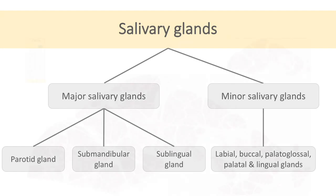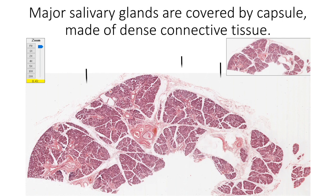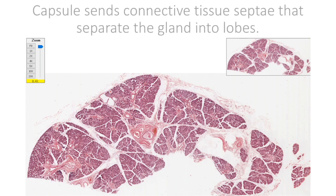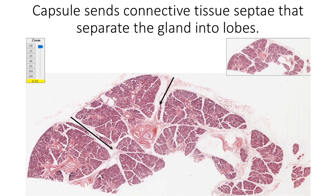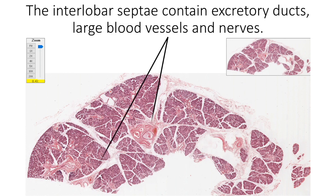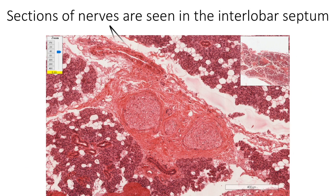Major salivary glands are covered by a capsule made up of moderately dense connective tissue. The capsule sends connective tissue septa into the gland, dividing it into many lobes. The interlobar septa contain larger salivary ducts, large blood vessels, and few nerves. In the case of the parotid gland, the interlobar septum may also show sections of facial nerve branches.